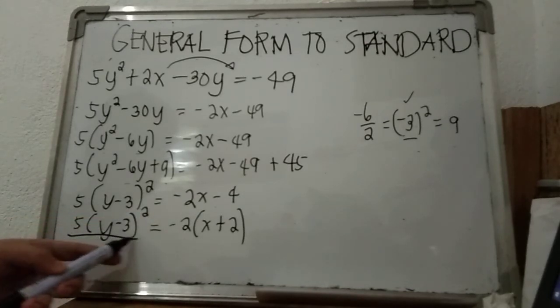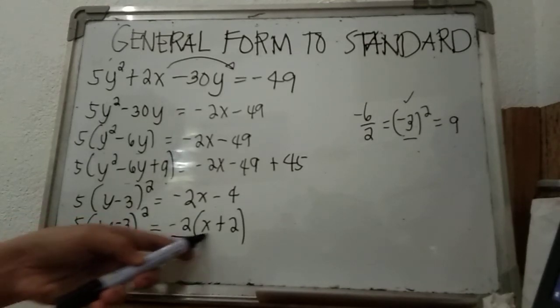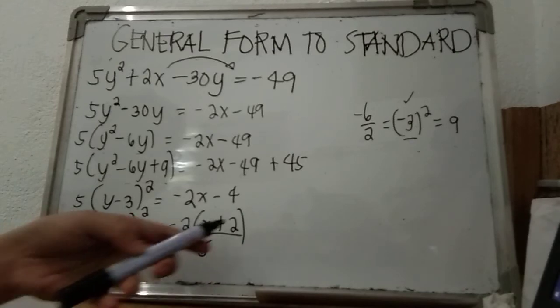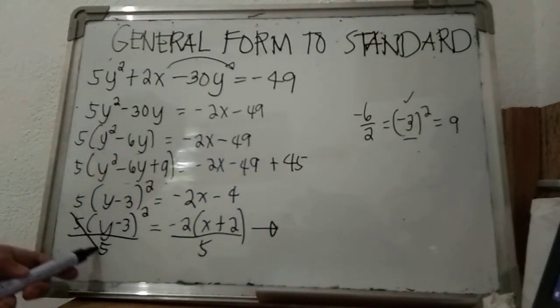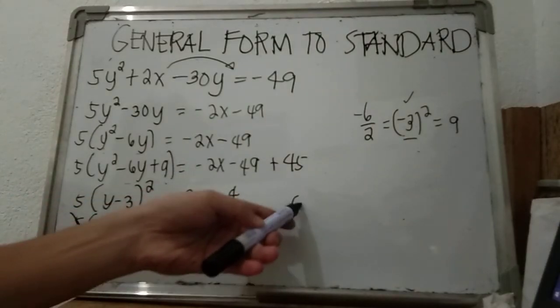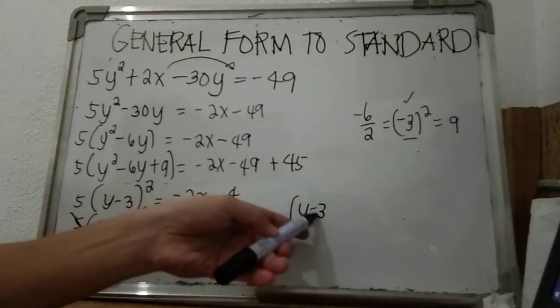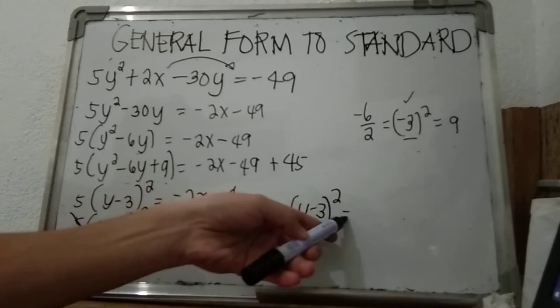At this point we are going to divide both sides by 5. What's left on the left side is (y minus 3)².